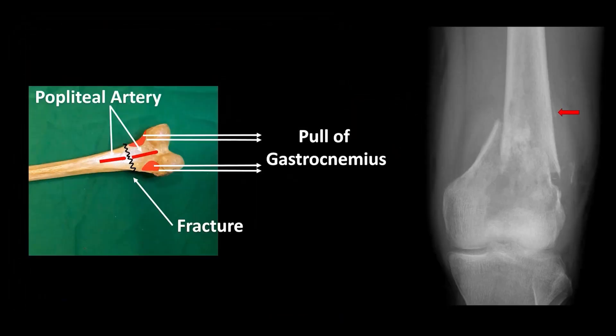Fracture of the distal shaft of the femur. Fractures of the lower end of the shaft immediately above the condyles are relatively rare. Fortunately so, because they can be extremely difficult to treat since the small distal fragment is tilted backwards by gastrocnemius, the only muscle which is attached to it. The sharp proximal edge of the distal fragment may also tear the popliteal artery, which lies directly behind it.